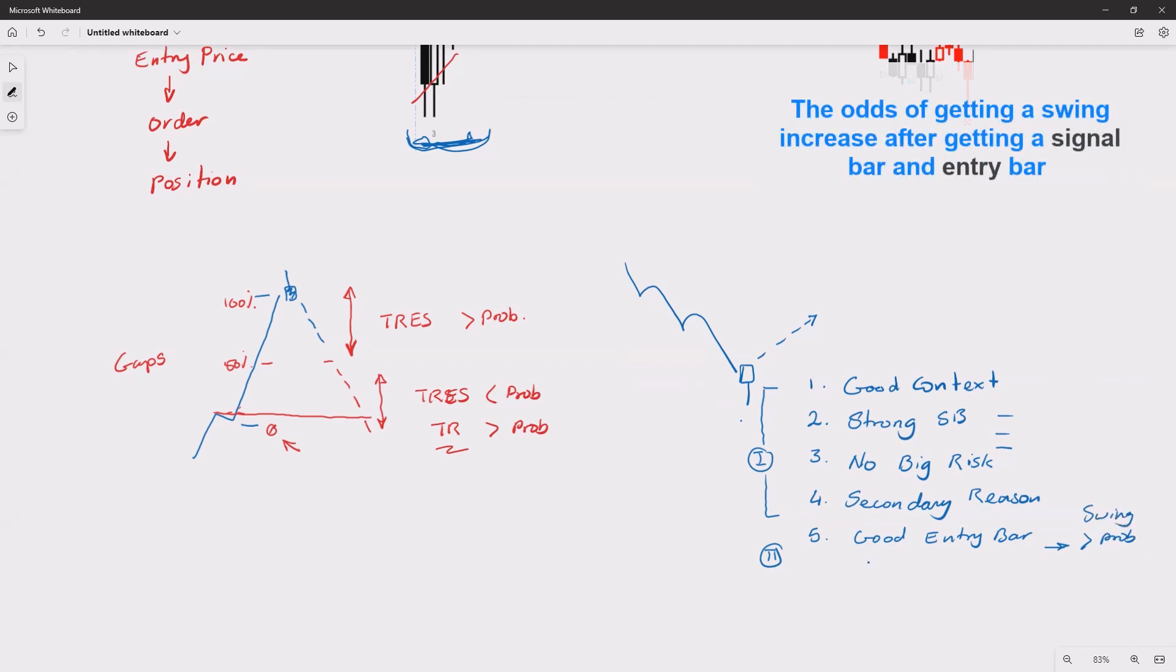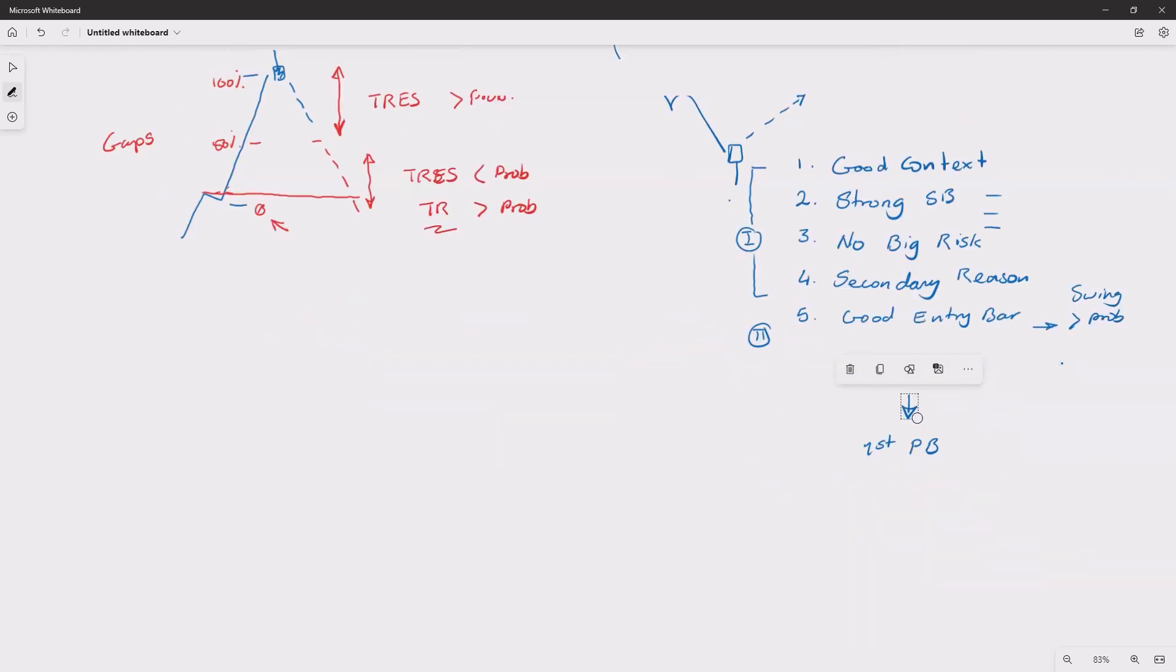Now, if you are a mostly limit order trader like I am, then we are interested in the first pullback. And there's one more thing—so there's a six here. You want the always-in direction to flip.